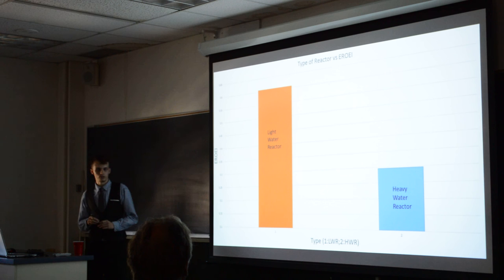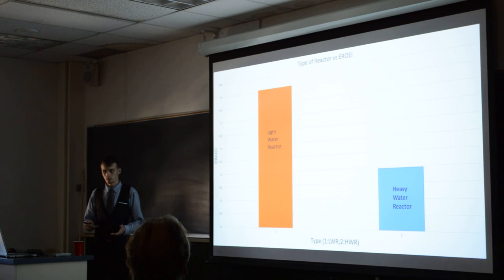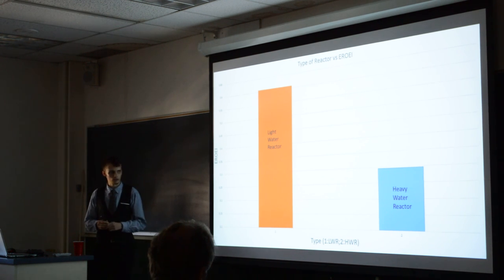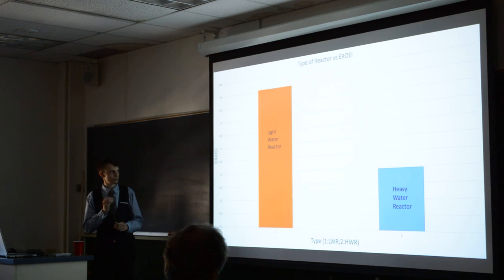Light water reactors use regular water. And they're inexpensive to build. Heavy water uses deuterium water. And they can use just straight, naturally occurring uranium. You don't have to refine it. But it's lower because of how much more expensive they are to build.